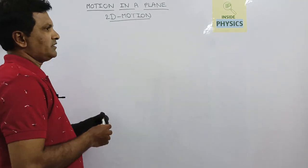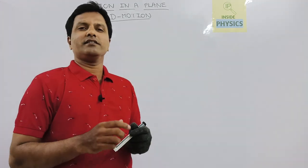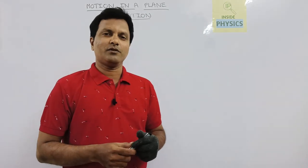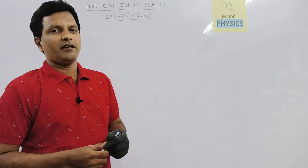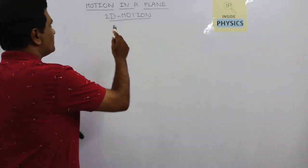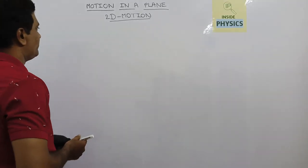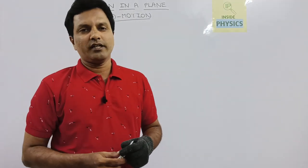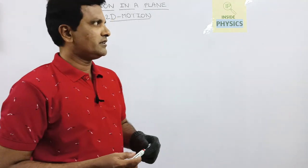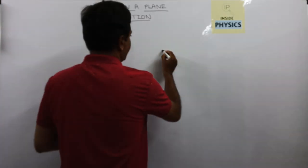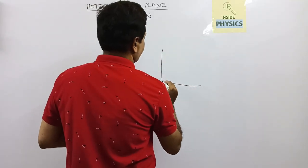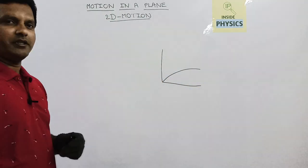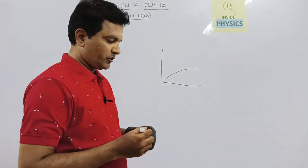Prior to this, there is one chapter that is straight line motion — one dimensional motion. We have discussed some topics in one dimensional motion in previous classes. Today we will discuss what is motion in a plane or two dimensional motion. Any object that is moving in a two dimensional way, that is moving in a plane, is called a projectile.